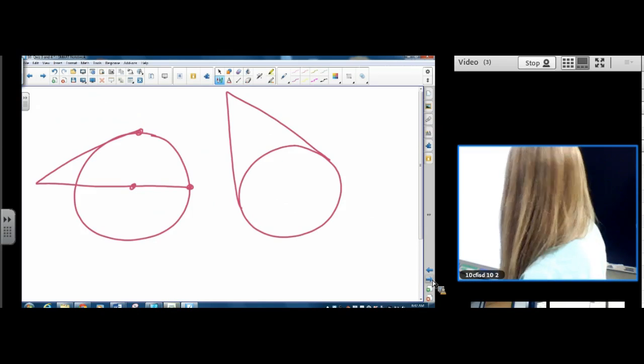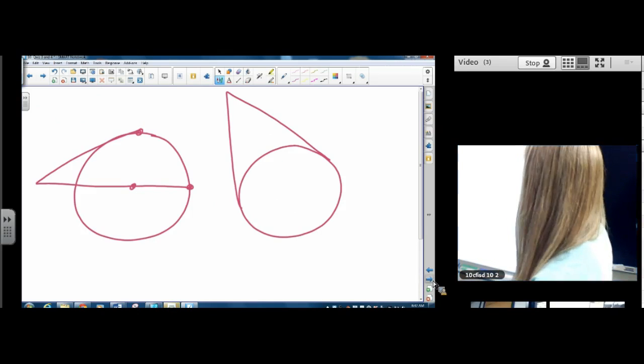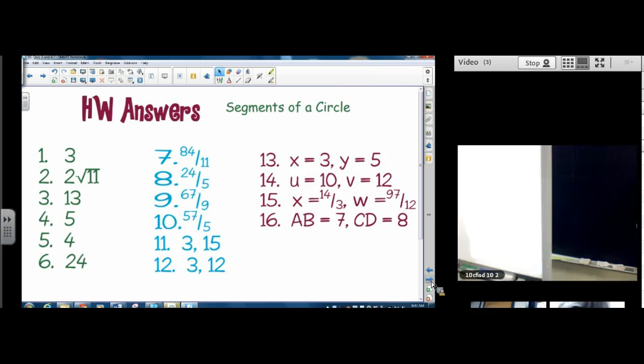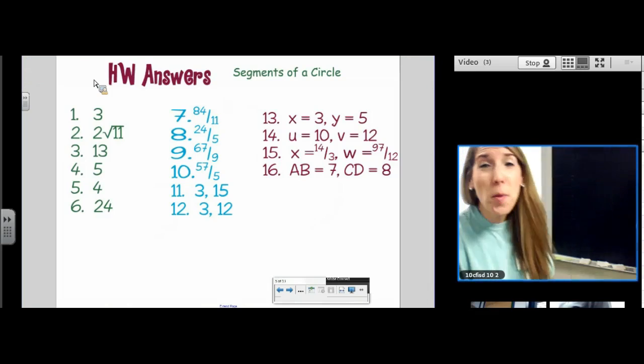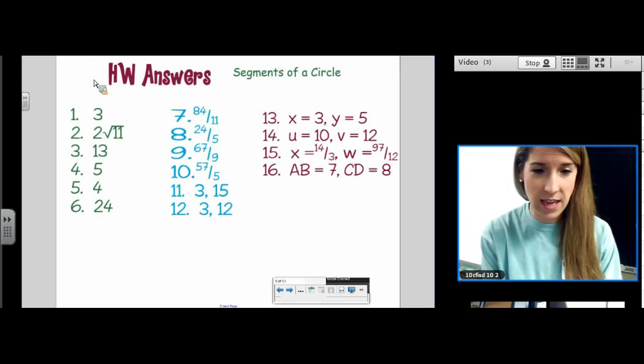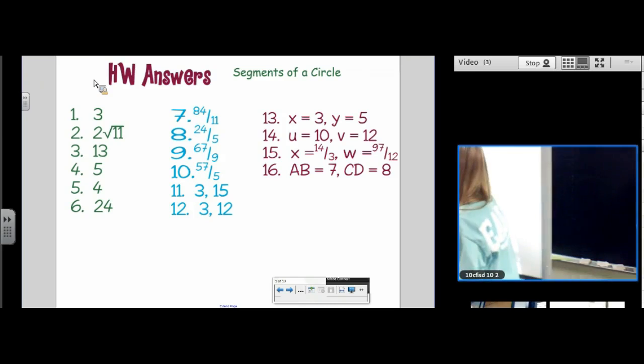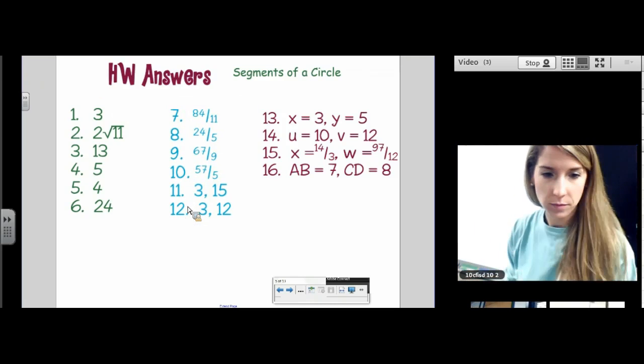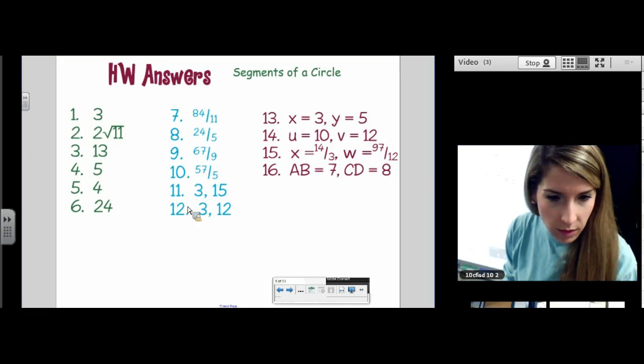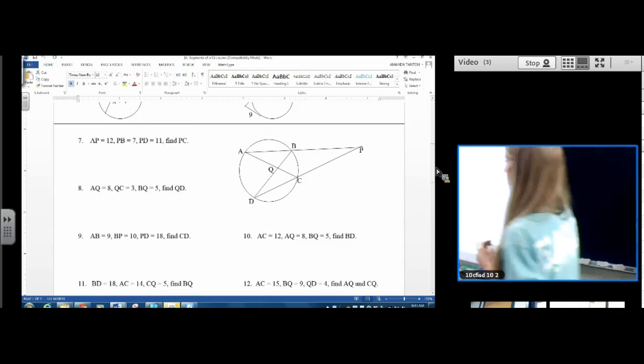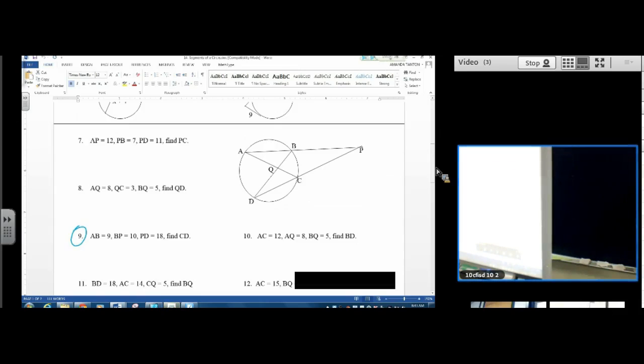Okay, so I gave you a little time to look at the homework answers. I hope that you have some that you want to ask me about so I can solve some of these things. Fifteen, okay. Eleven and fifteen. Starting with number nine. On number nine it says that AB is 9, BP is 10, PD is 18. Find CD.